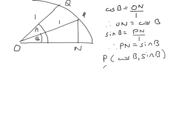And in a similar way, the coordinates of Q are cos A, sine A. This works because the radius of the circle is 1. What we're going to think about is the length of the line from P to Q. That's meant to be a straight line.